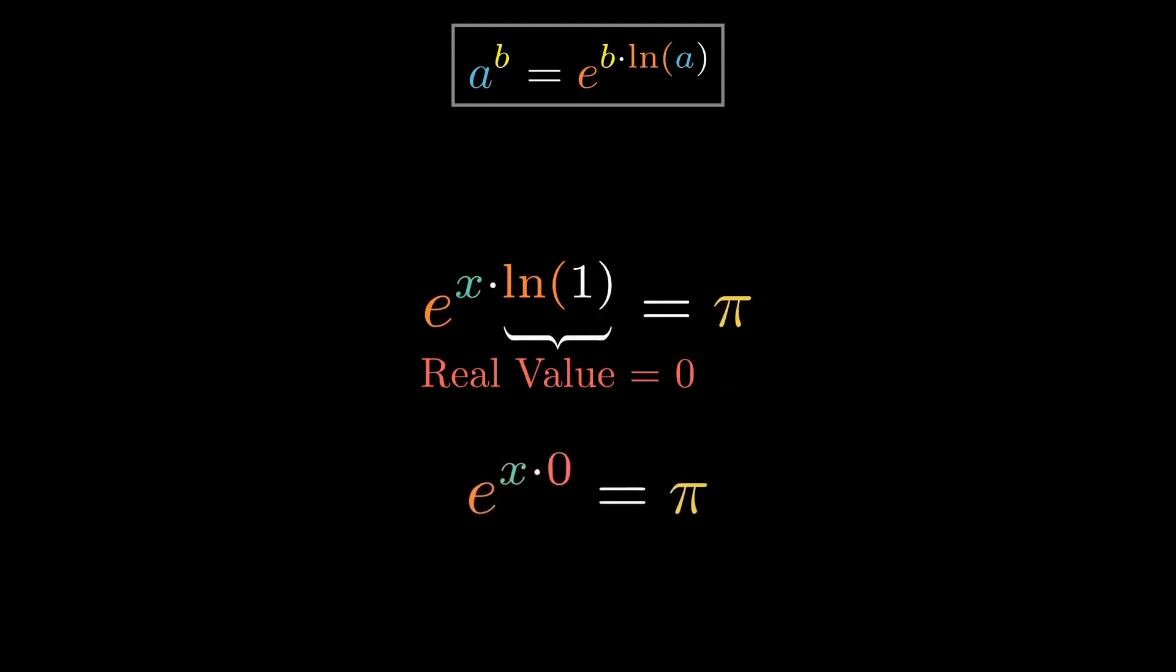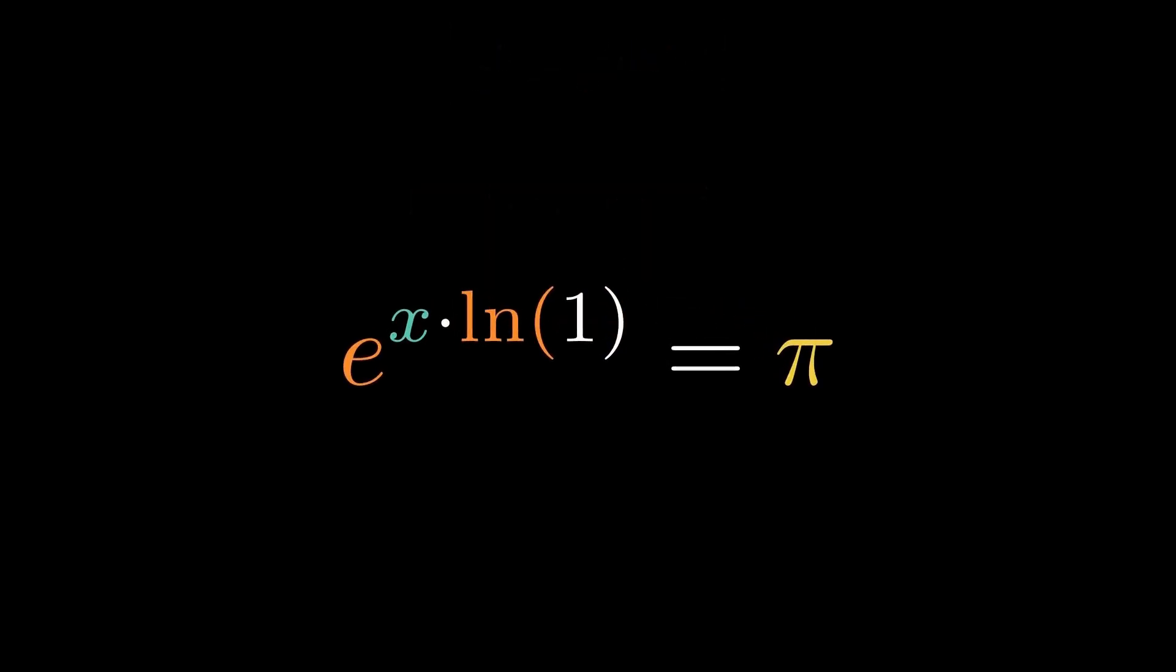But on the real line, log of 1 is 0. So this collapses to e to the 0 equals π, meaning 1 equals π, error. So the real question is, is log of 1 equals 0 the whole story?